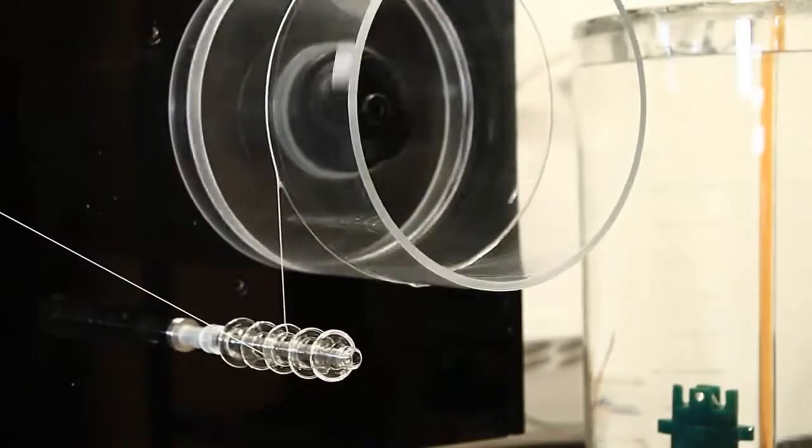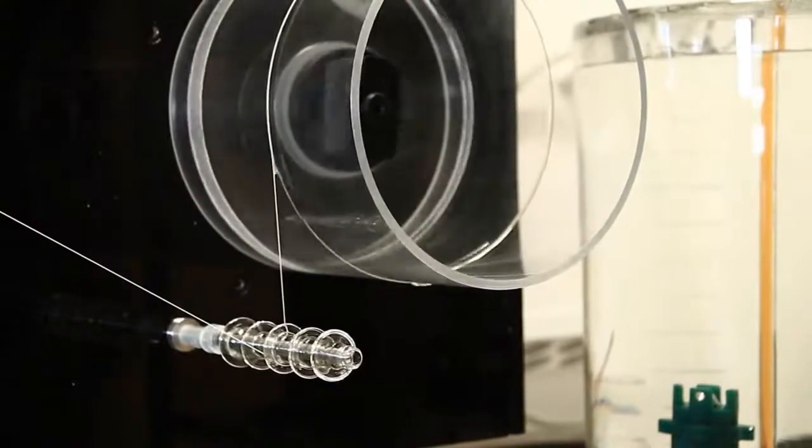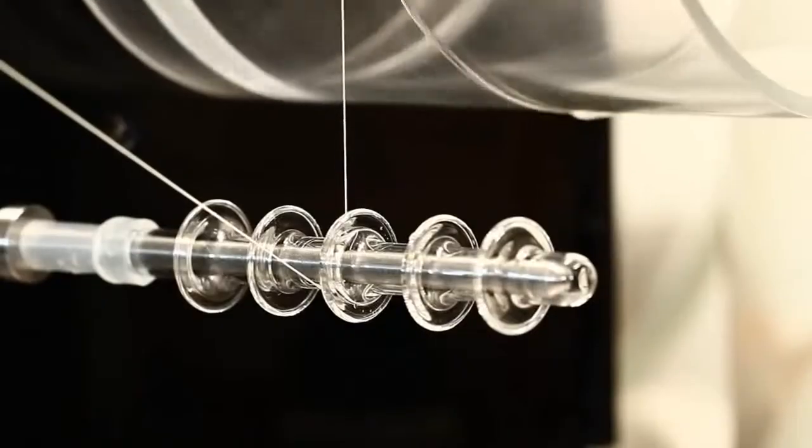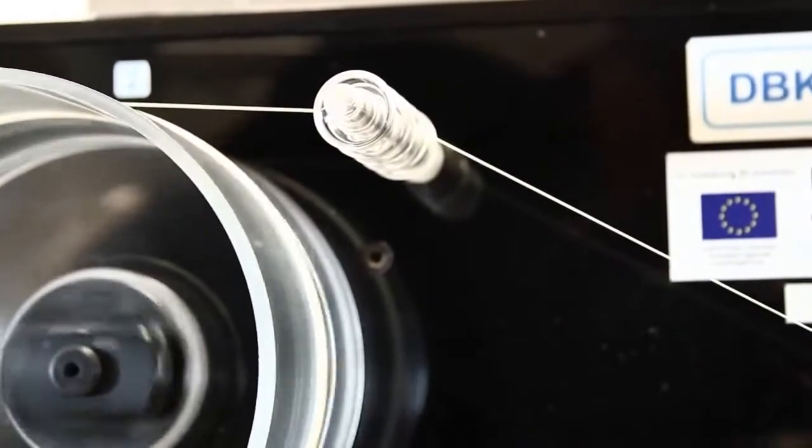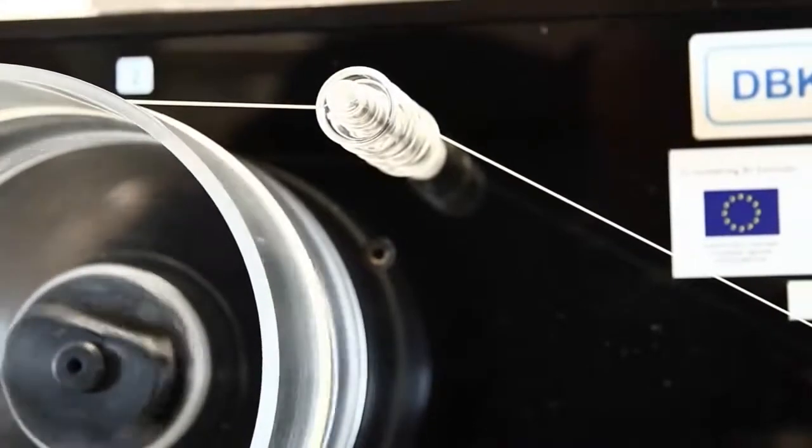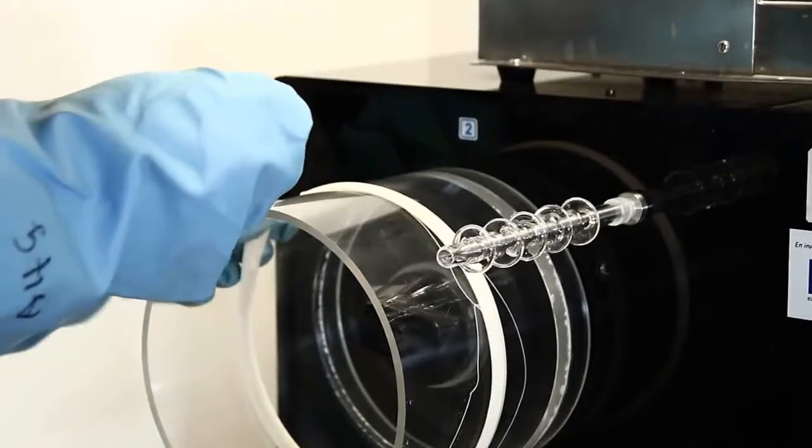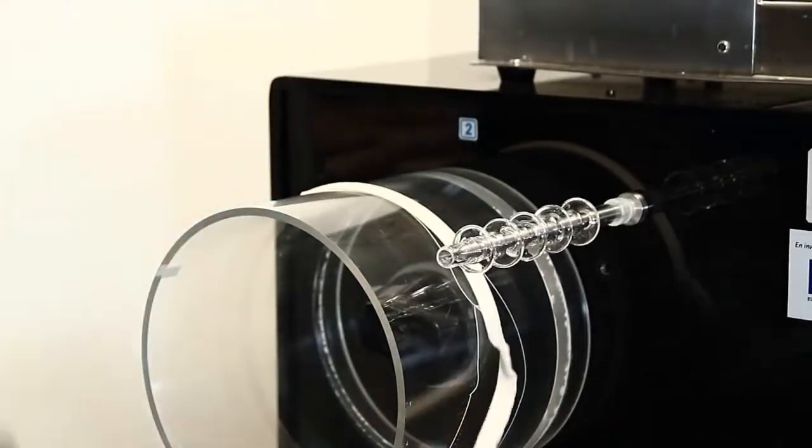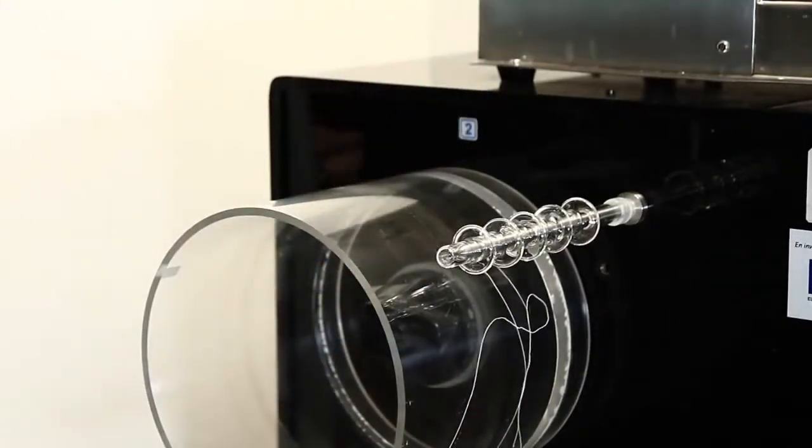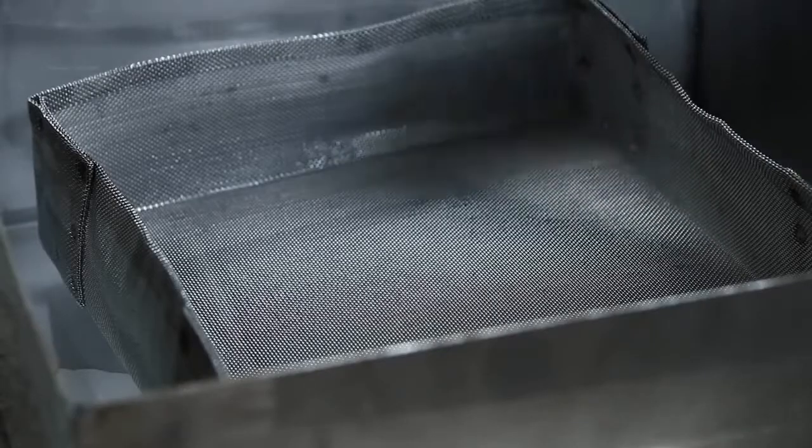The filaments are stretched between two wheels. And when the spinning is completed, the viscose fibers are cut, washed, and bleached in several steps before drying and fiber analysis.